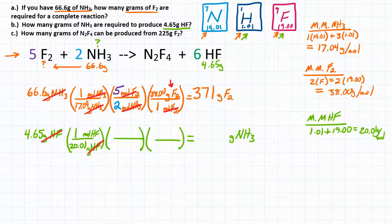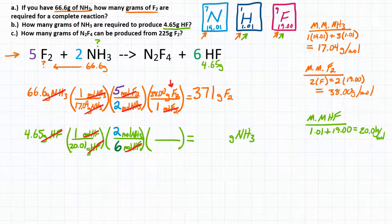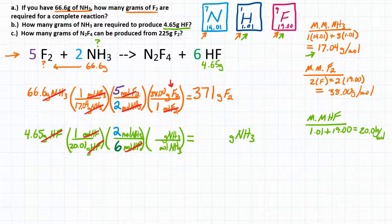Now we have moles of HF, which we want to convert to moles of NH3 using our mole ratios. The coefficient of HF is 6, and the coefficient of NH3 is 2. Moles of HF cancel. Then in the third step, we take moles of NH3 and convert to grams of NH3 using the molar mass of NH3, which we already calculated as 17.04 grams per mole. Units cancel and we can do the math.